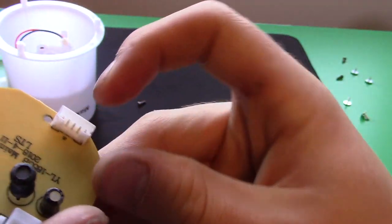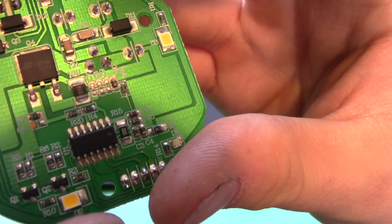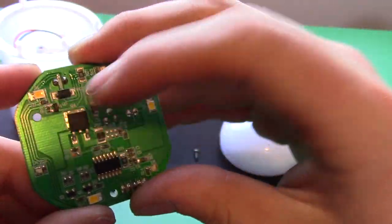You can see this is the connector that went to the buttons and LEDs, and you can see the traces go right to it. And there's the three LEDs.